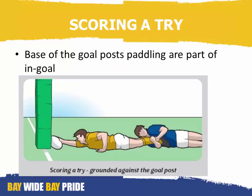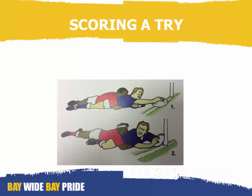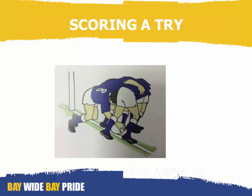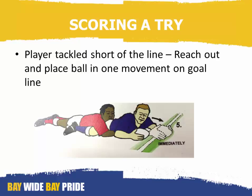The base of the goal post padding is part of in goal — if a player places the ball there, he scores a try. The goal line is part of in goal, and that's a try. Where a ruck is formed and the ball is on the goal line, the ruck is ended and any player can ground the ball — if it's an attacking player, it's a try.